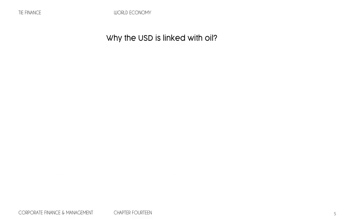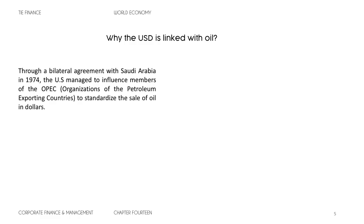So why is the U.S. dollar linked with oil? If it's not linked with gold, it must be linked with oil. This occurred through a bilateral agreement with Saudi Arabia. In 1974, the U.S. managed to influence members of OPEC — the Organization of the Petroleum Exporting Countries — to standardize the sale of oil in U.S. dollars. If you control money, you will be very powerful, and if you have the source of that money — the Federal Reserve, the printing press — you will be powerful.